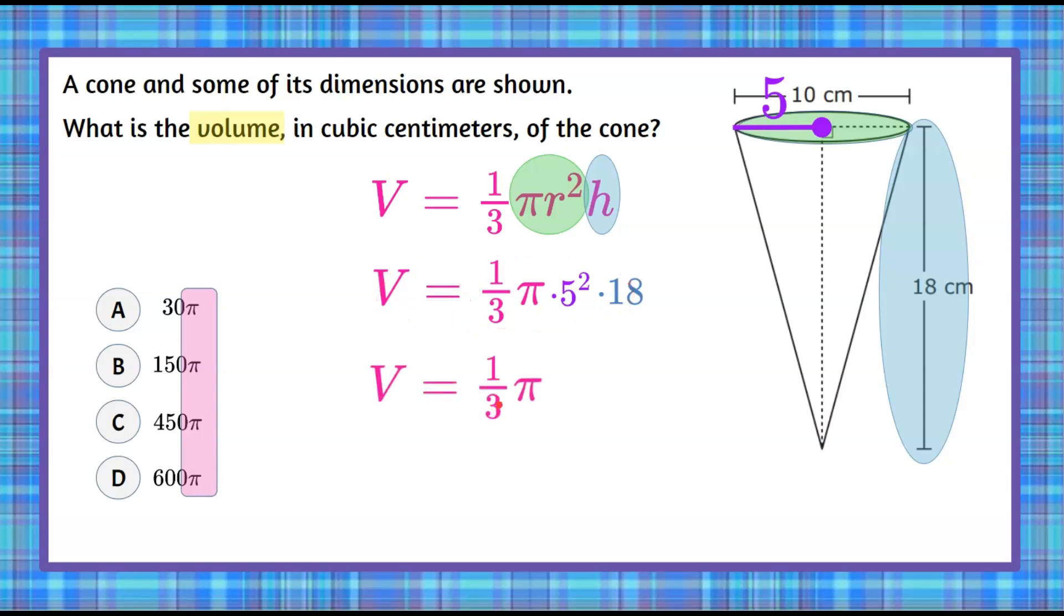So again, we're going to bring down our one-third times pi, and we're going to do 5 squared. 5 squared is 5 times 5, which is 25, and multiply by 18.